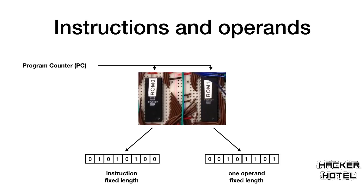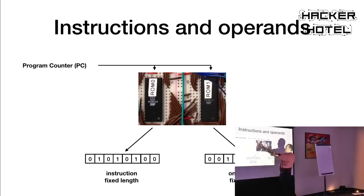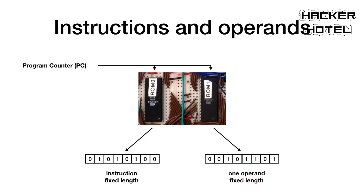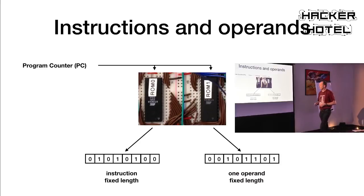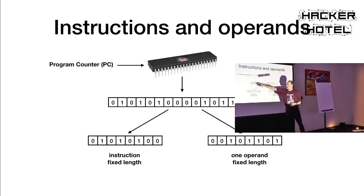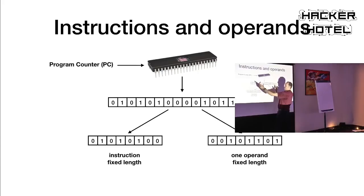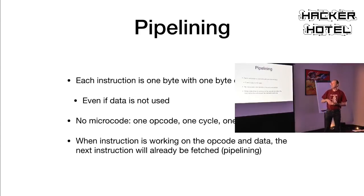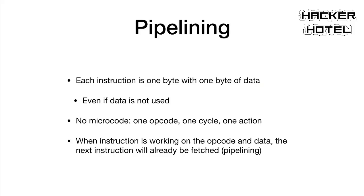We also need operands. In the original design, we had one ROM for instructions and a separate ROM for operands. We decided every instruction has one operand — even if not needed, we always read one out. In the final design, we combined this into an EEPROM with 16-bit output: the first 8 bits are always the instruction, the second 8 bits are always one operand. Each instruction is one clock cycle with no microcode.